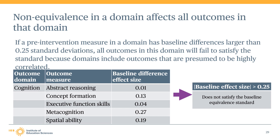Let's say the baseline equivalence effect sizes for these five measures are 0.01, 0.13, 0.04, 0.27, and 0.19. Because the metacognition measure had a baseline difference of 0.27 standard deviations, this is greater than the 0.25 threshold. So this means that all outcomes in this cognition domain fail to satisfy the baseline equivalence standard.